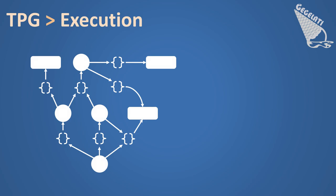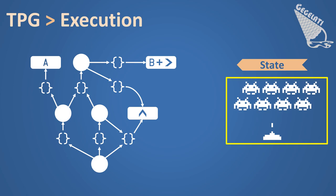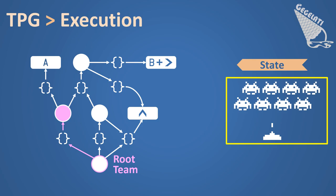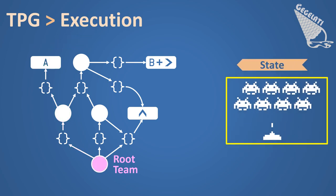In the video game example, action vertices are each associated to a combination of buttons to press. The best way to understand how a TPG works is to see, step by step, how it reacts to each new state of the learning environment. When a new array of pixels of the screen arrives, the execution of the TPG starts from the root vertex of the graph. Starting from this root team, all programs associated to outgoing edges are executed on the pixels of the environment. Once all program results have been computed, the largest return value is identified. Following the path given by this value, the execution of the graph continues. Eventually, the TPG execution will reach a leaf vertex associated to an action. This action is executed and the TPG restarts its execution on the next state of the environment.